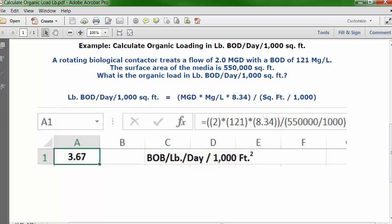Press enter or the return key and in A1 you'll see our answer: 3.67 pounds of BOD per day per 1,000 square feet based on this data. That's the answer, 3.67.